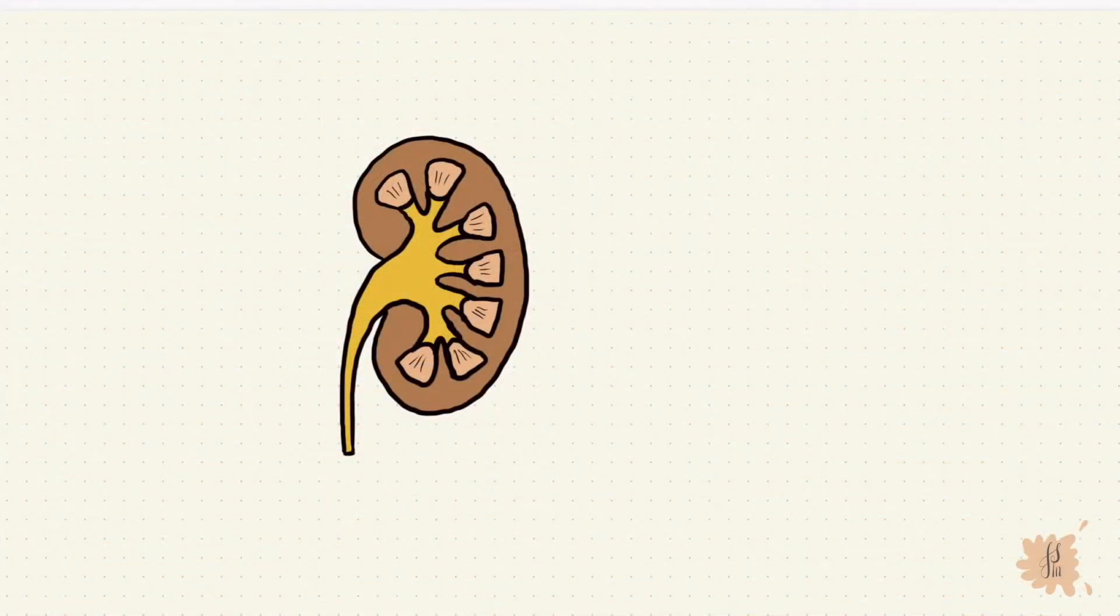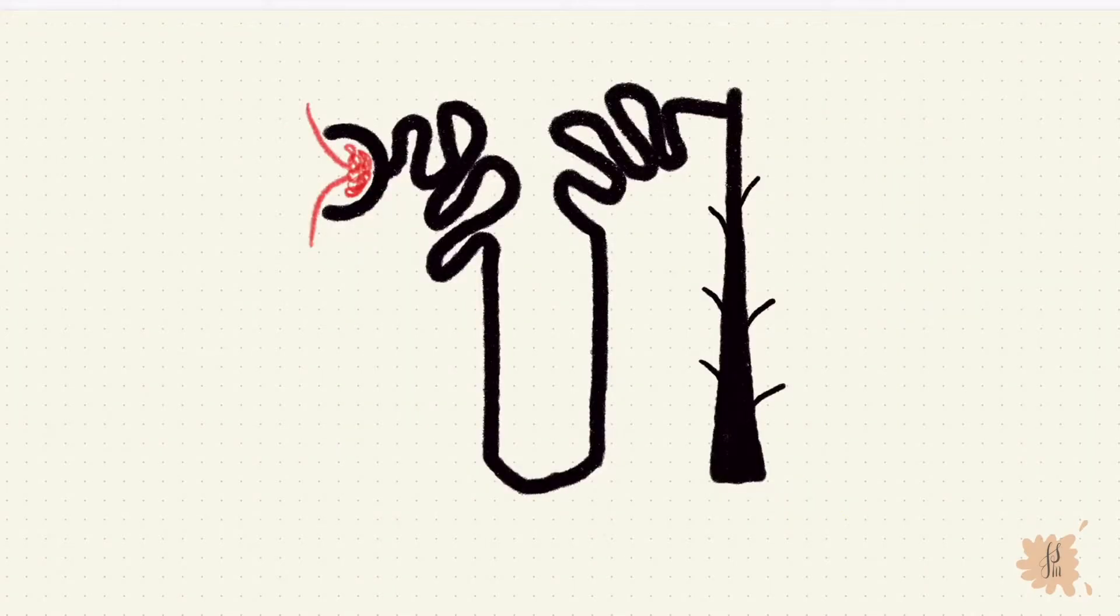Each kidney has millions of nephrons. Each nephron has a glomerulus, a proximal convoluted tubule, the loop of Henle, the distal convoluted tubule, and the collecting duct.